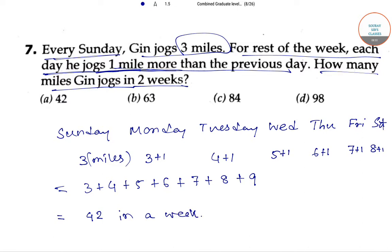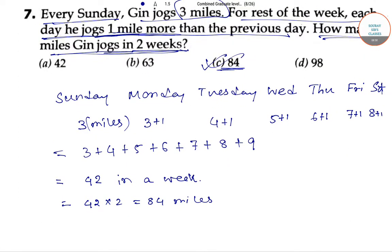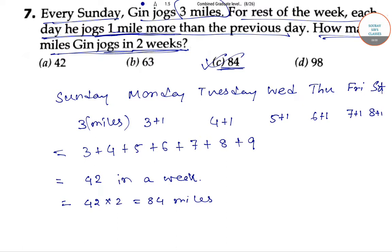We have to find how many miles in two weeks. So 42 times 2, that makes 84 miles. 84 miles in two weeks. Here we have 84 in option C. Option C will be our answer. Thank you for watching this video.